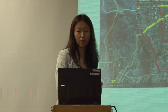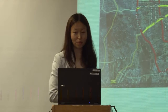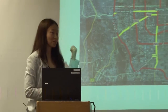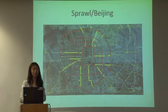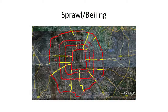Now I'll talk about the second part of the presentation: infrastructure. I'll use Beijing as an example to talk about how the city has expanded at a very aggressive pace over the past 20 years. This is the Google map of Beijing, and the red circles are expressways. The city has been expanding very rapidly. In the mid-90s there were only three ring roads, and today there are seven ring roads — the seventh ring road is already built.